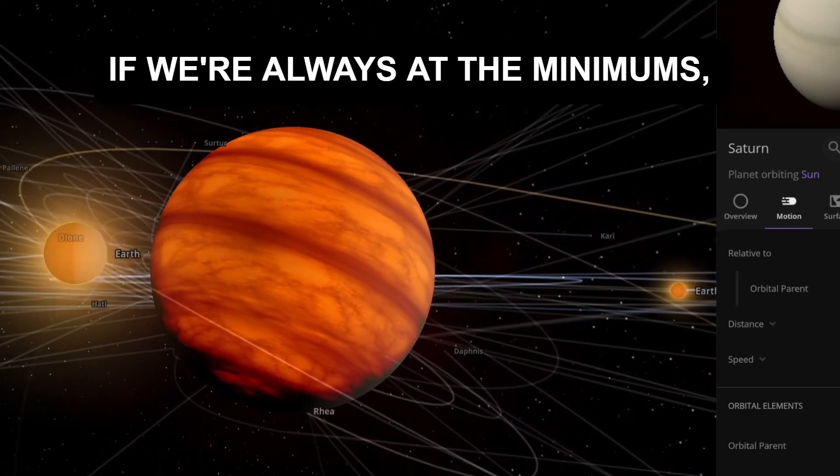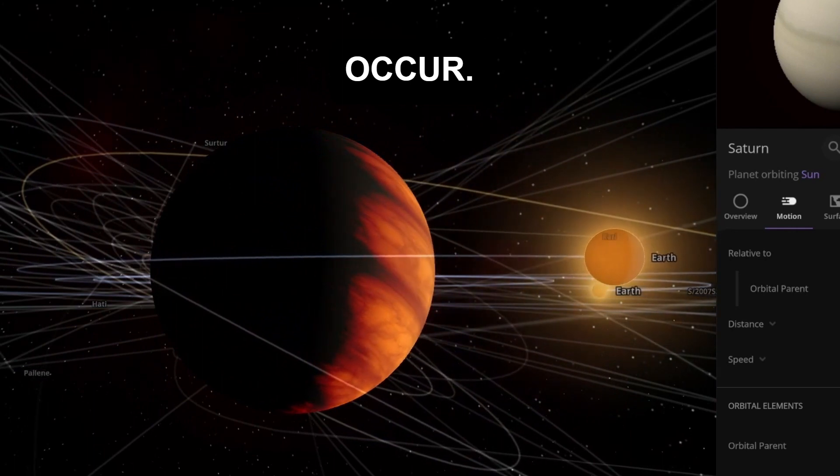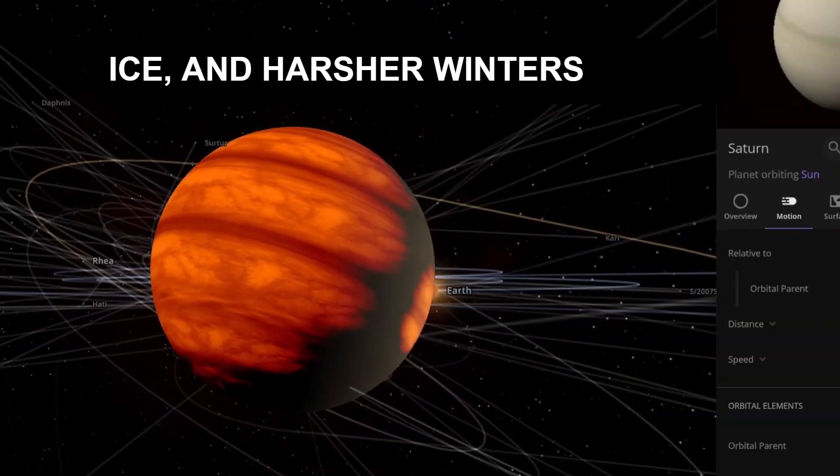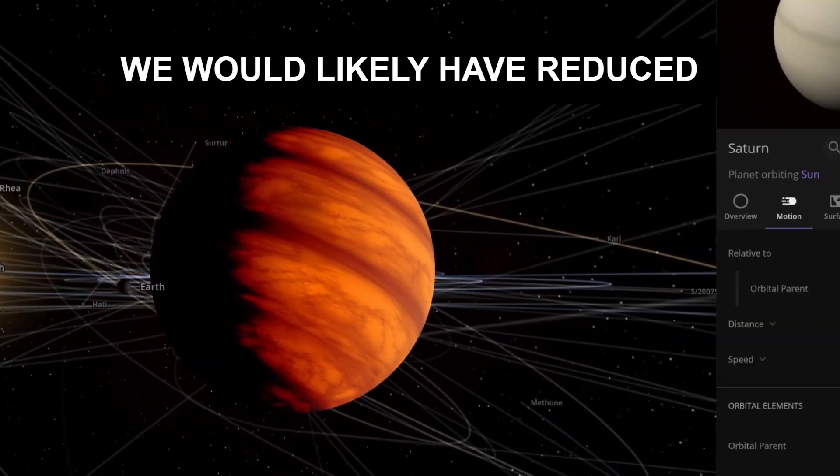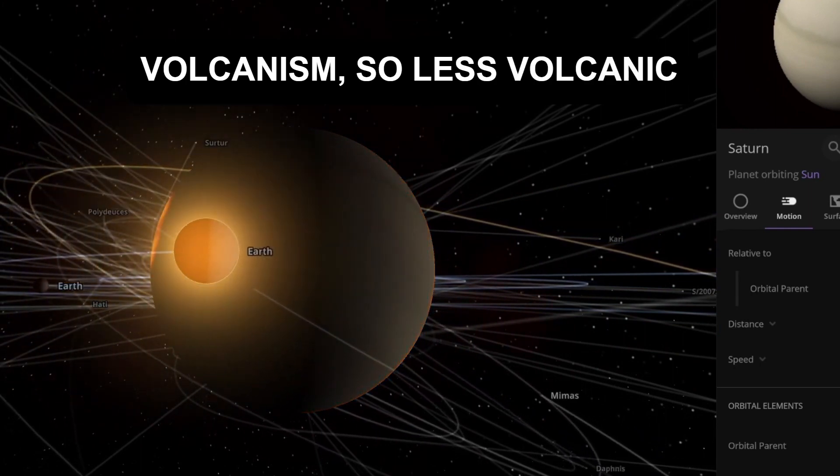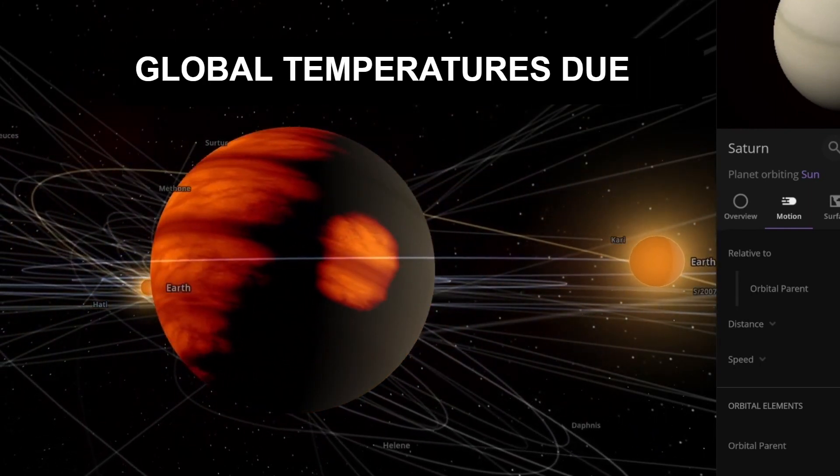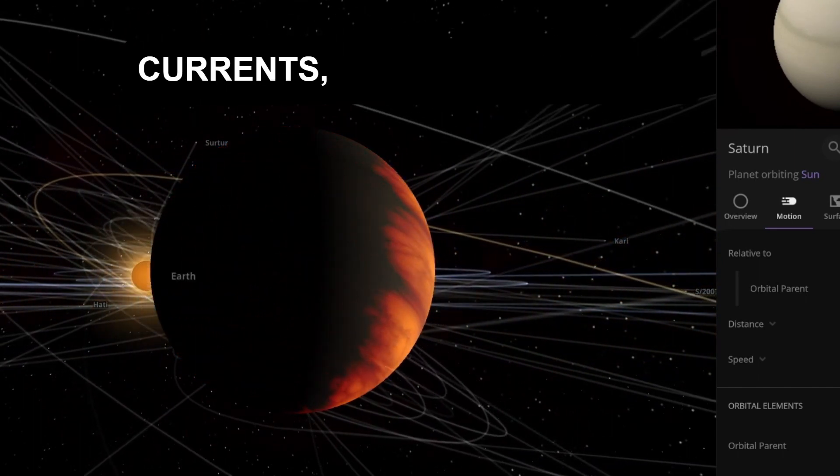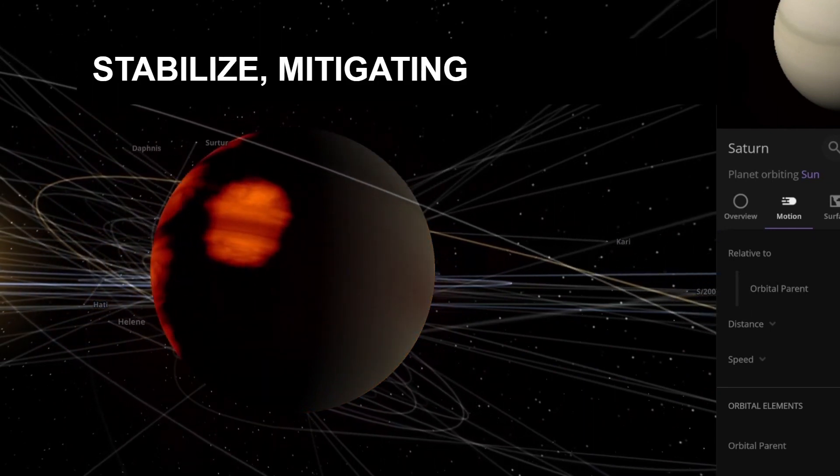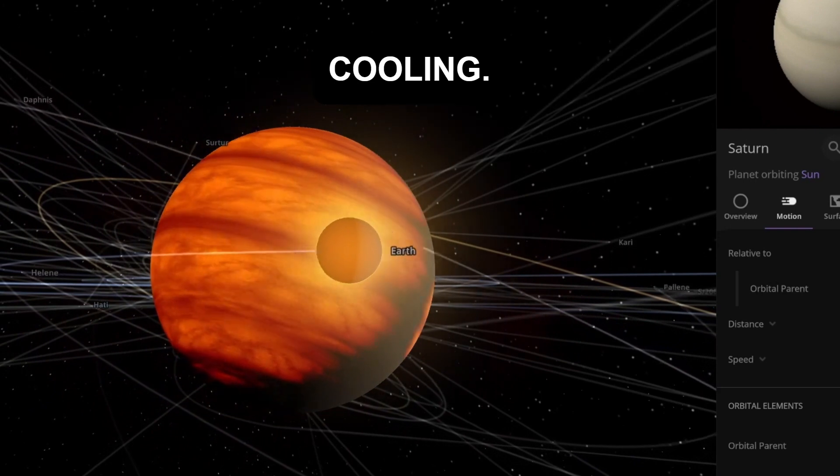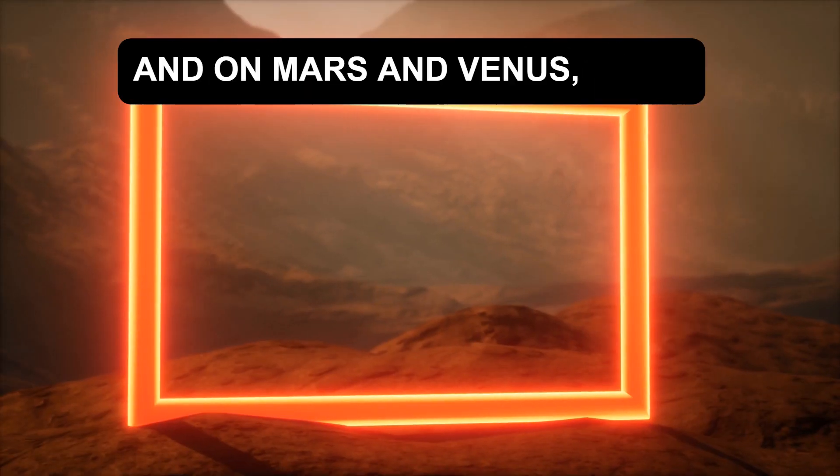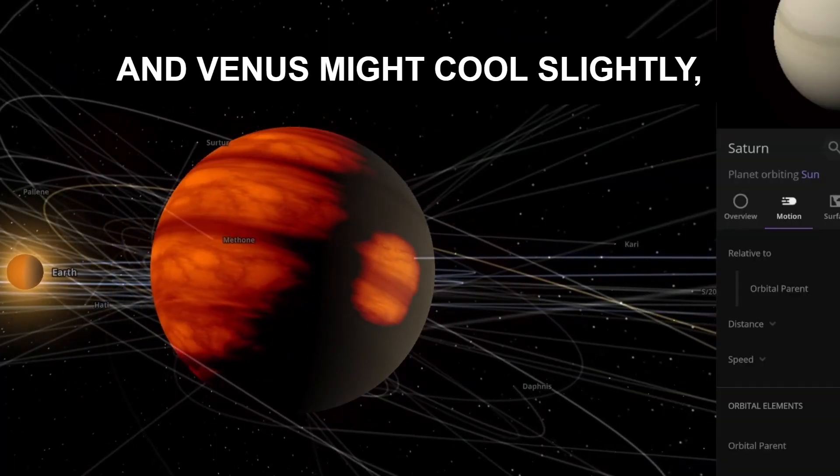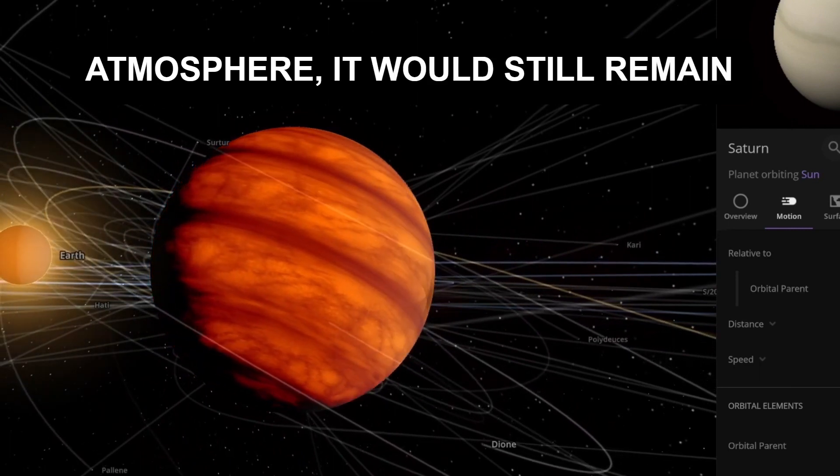If we were always at the minimums, pretty much the opposite would occur. We would likely have a new ice age. Advancing glaciers, expanding sea ice, and harsher winters could dominate. We would likely have reduced volcanism. Less volcanic eruptions, which would cool global temperatures due to fewer greenhouse gas releases. The impacts on the AMOC and ocean currents, they would likely stabilize, mitigating some climate extremes, but leading to overall cooling. And on Mars and Venus, Mars could see fewer dust storms and more stable polar ice caps. And Venus might cool slightly, though because of its thick atmosphere, it would still remain scorching.